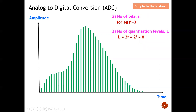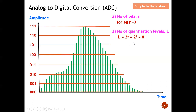Next, we talk about number of bits. For this case, let's say the number of bits equals 3. Next, we talk about number of quantization levels L. L equals 2 to the power of n, which is the number of bits. With n equals 3, 2 to the power of 3 equals 8. So we are going to have 8 levels — 1, 2, 3, 4, 5, 6, 7, 8 — to describe this analog signal. This is why the number of bits is correlated with the number of quantization levels.